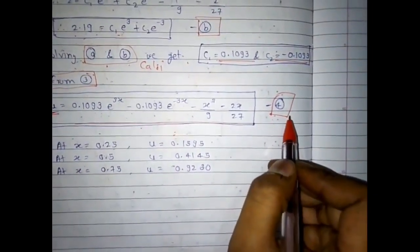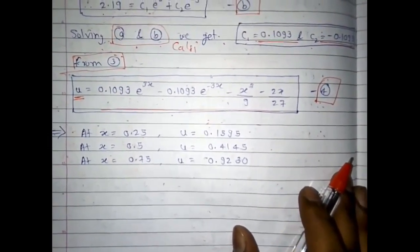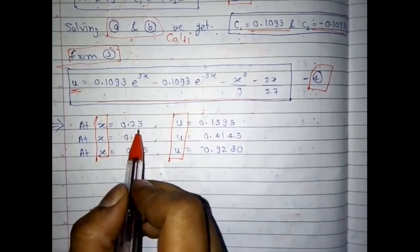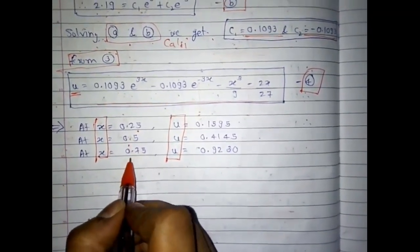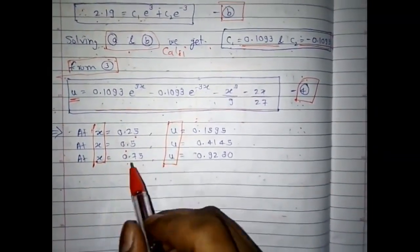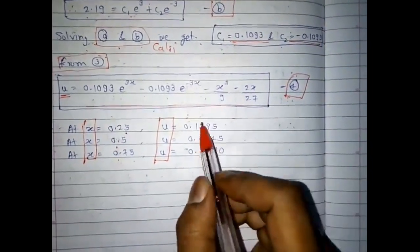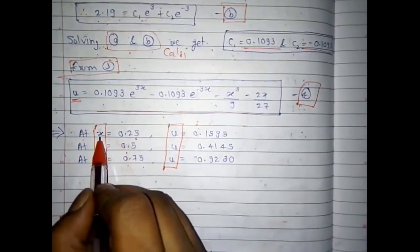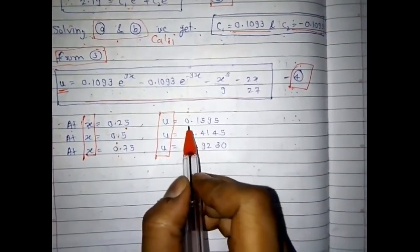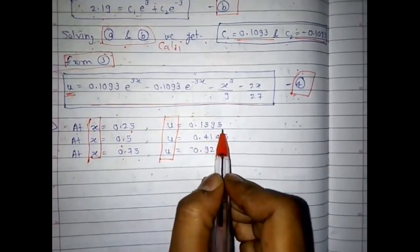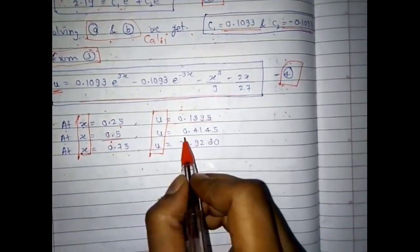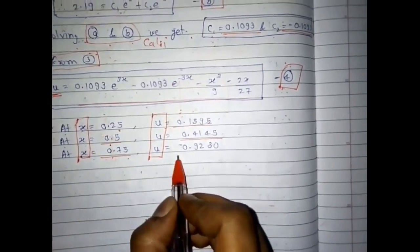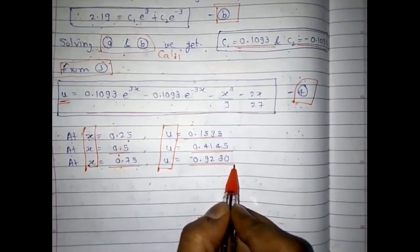Using equation (4), we calculate u at the required x values. At x = 0.25, u = 0.1595. At x = 0.5, u = 0.4145. At x = 0.75, u = 0.9230.